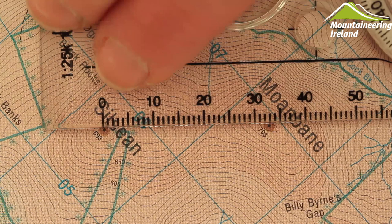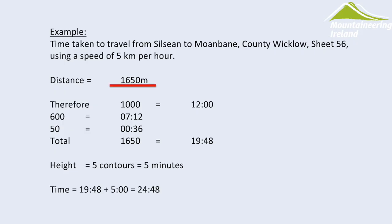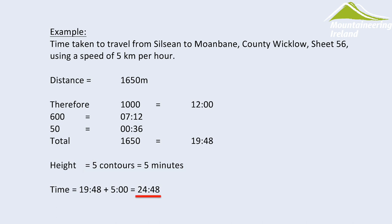Another way to plot your progress in the mountains is to time yourself. You need to measure the distance you're going to cover and count the number of contours you're going to climb. In our example we've got 1 kilometre 650 metres, so the total time would be 19 minutes and 48 seconds. We had 5 contours which equals 5 minutes, and then we add the two together to get 24 minutes 48 seconds.